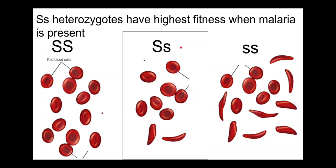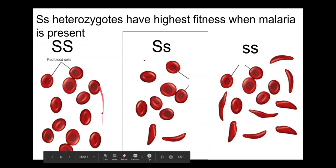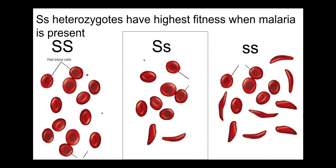The mix of the big S and the little s allele results in a heterozygote with the highest fitness because those red blood cells are resistant to invasion and reproduction of the malarial parasite. If you're little s little s, you're out of luck because you have sickle cell anemia, a debilitating disease. If you're big S big S, you don't have sickle cell anemia and your red blood cells function normally, but you're completely susceptible to malaria.